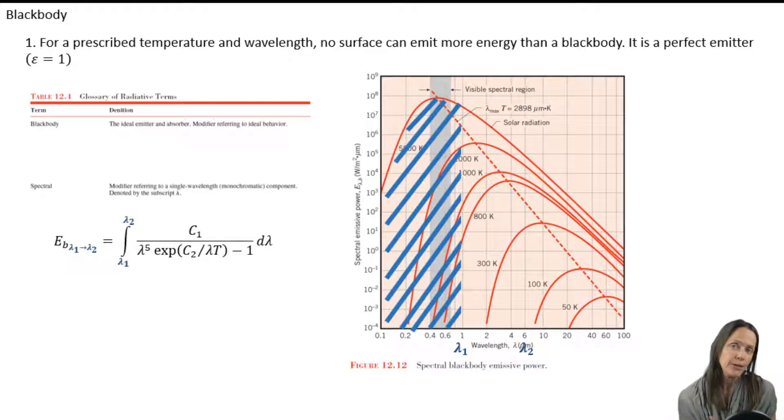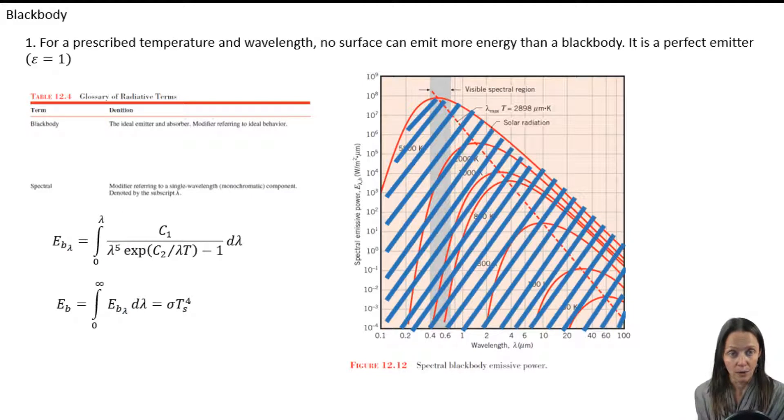All right. So I know I can integrate under the curve at a particular temperature to find the total spectral, i.e. integrated over all of those wavelengths, the spectral emissive power, which breaks down to that Stefan Boltzmann law, the sigma TS raised to the fourth power.